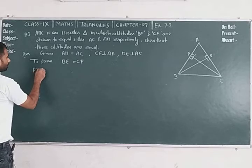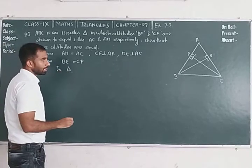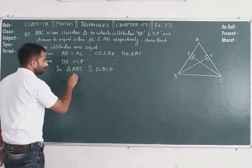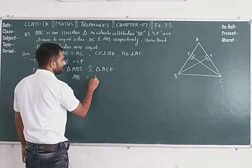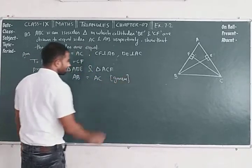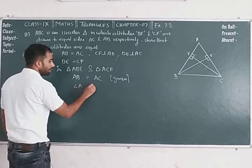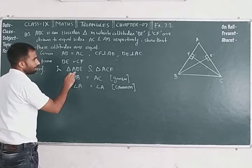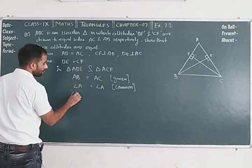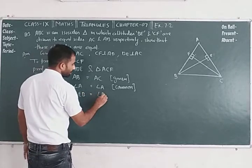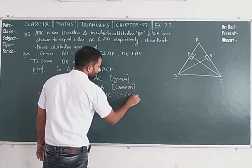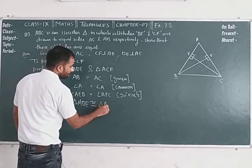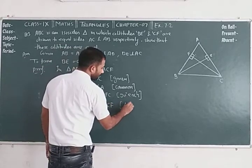Proof: In triangle ABE and triangle ACF. In triangle ABE, AB is equal to AC — given. Angle A is equal to angle A — common. Angle AEB is equal to angle AFC — 90 degrees each. Therefore triangle ABE is congruent to triangle ACF by Angle-Angle-Side criteria.